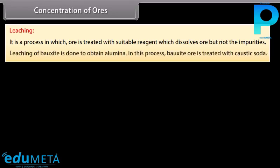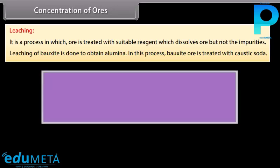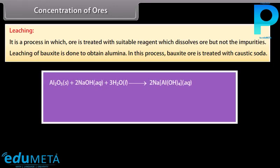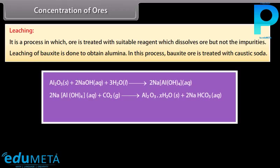Leaching of bauxite is done to obtain alumina. Bauxite ore is treated with caustic soda. Al₂O₃ dissolves in the concentrated solution, leaving behind impurities. The aluminate in solution is neutralized by passing CO₂ gas, and hydrated Al₂O₃ is precipitated. The precipitate of Al(OH)₃ is filtered, dried, and finally heated to about 1470 Kelvin to obtain pure Al₂O₃.